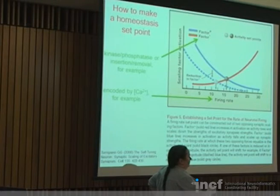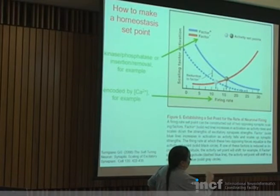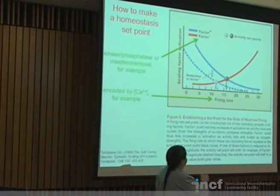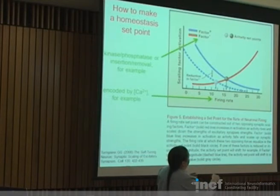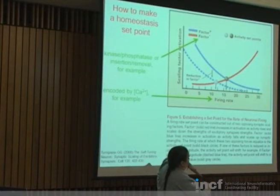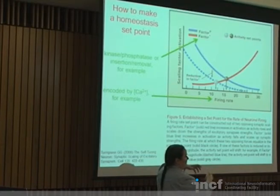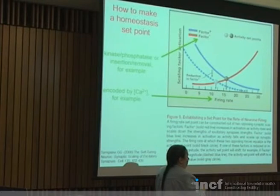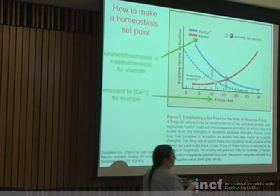On the question of set point precision — those slopes will determine over what range of calcium concentrations the set point can vary. This is just a very abstract schematic; even the shape of those curves doesn't necessarily have to look exactly like that. As long as you have a monotonically decreasing and a monotonically increasing dependence of two antagonistic factors, you'll get some kind of equilibrium point. Anything further — precision and things like that — will depend on exactly what the implementation is.